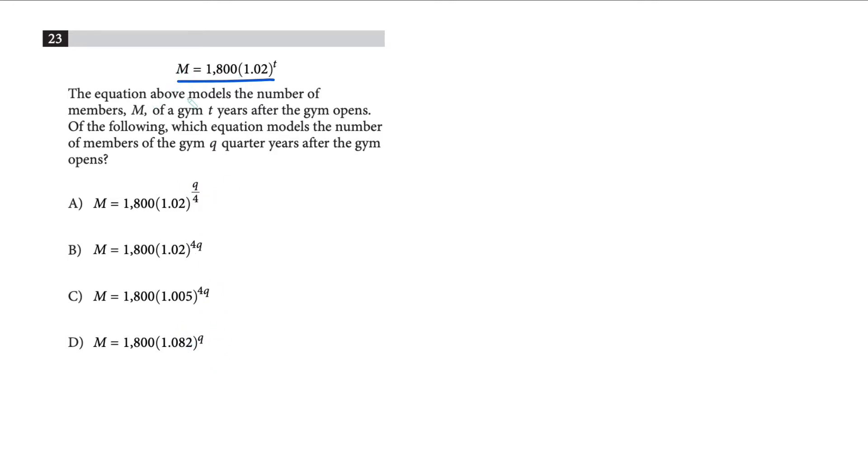You're given that the number of members M of a gym t years after the gym opens is given according to this formula. Now, what they're asking is after q quarter years - that's the confusion for some people.